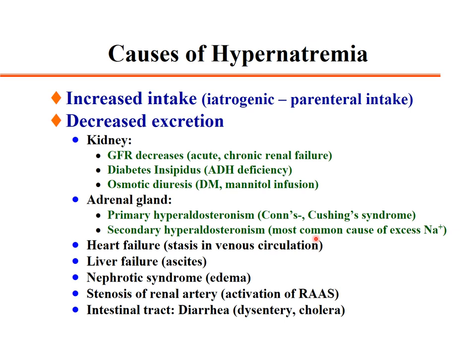Secondary hyperaldosteronism is a very common cause of excess sodium. Heart failure with venous stasis, liver failure with ascites, nephrotic syndrome causing edema — these are secondary hyperaldosteronism types. Renal artery stenosis activating the renin-angiotensin-aldosterone system, or intestinal losses such as diarrhea, dysentery, or cholera-induced loss of mainly hyponatremic solution.